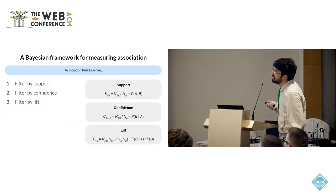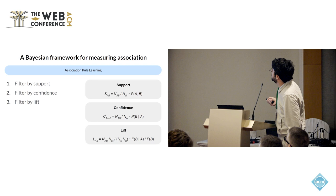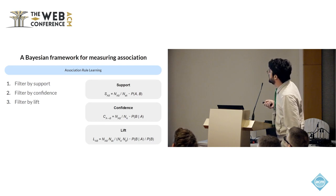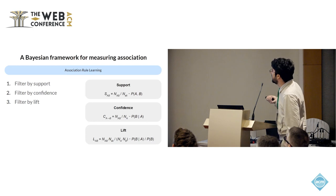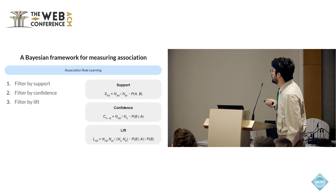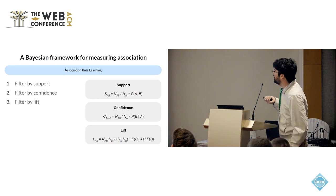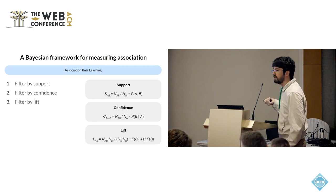One common way of checking for association is called association rule learning, usually done through three steps. The first step is filtering by support, which is basically taking the number of times two features A and B appear together and dividing by the overall number of samples. This gives a point estimate of the probability of getting the two things together, but it is not actually a measure of association — it is just a measure of how often you see these two things together.